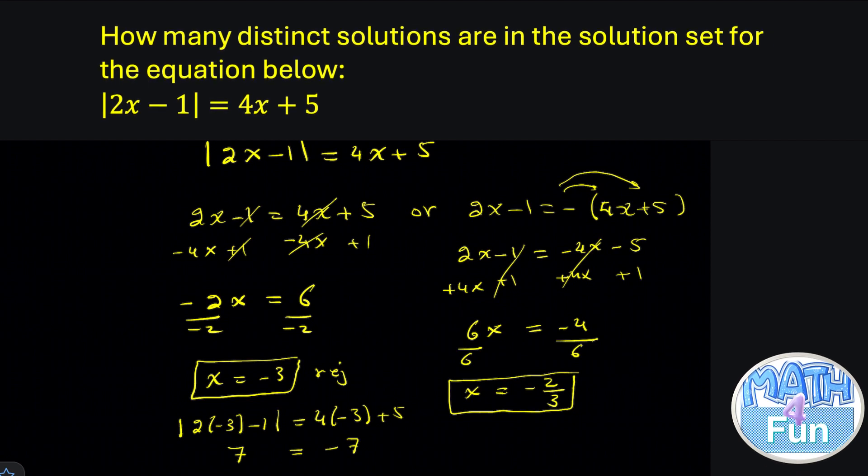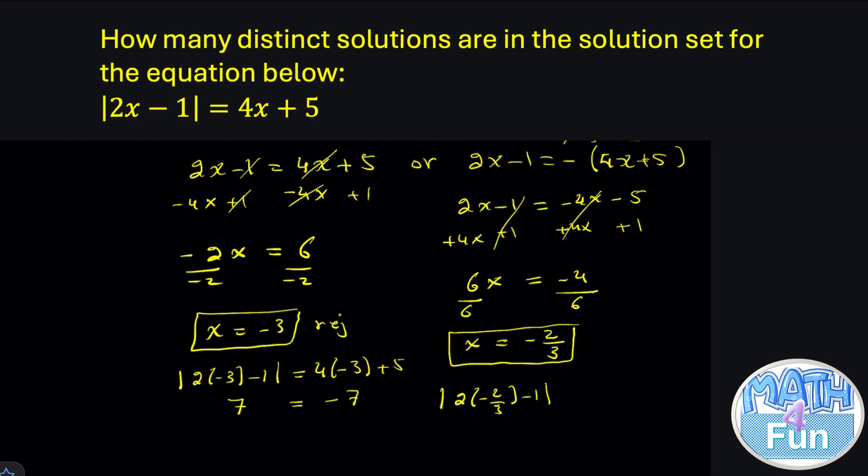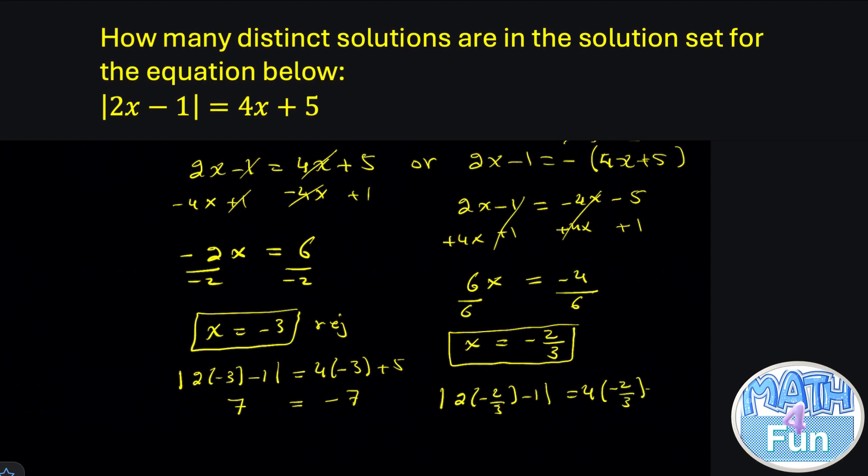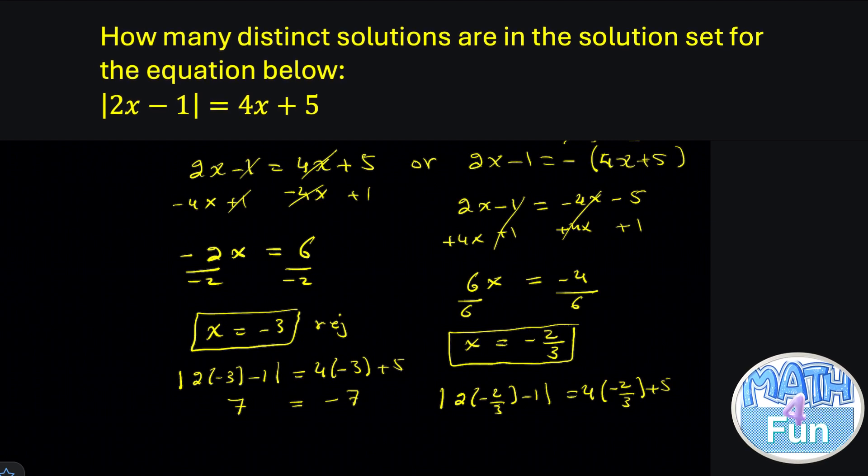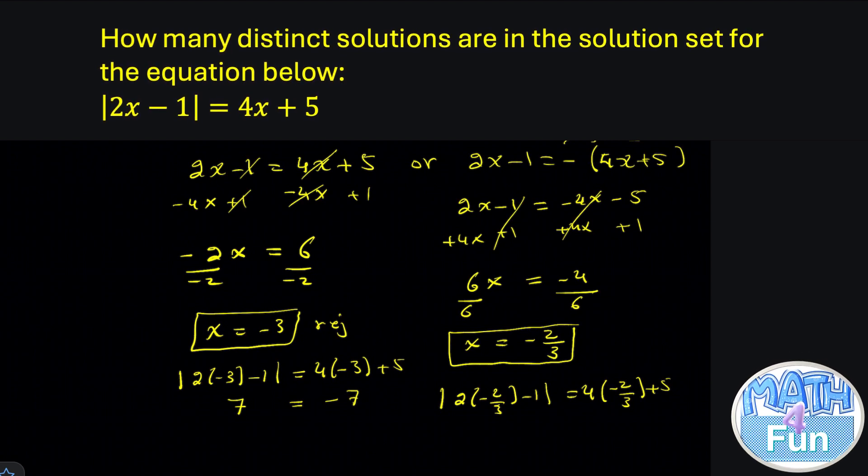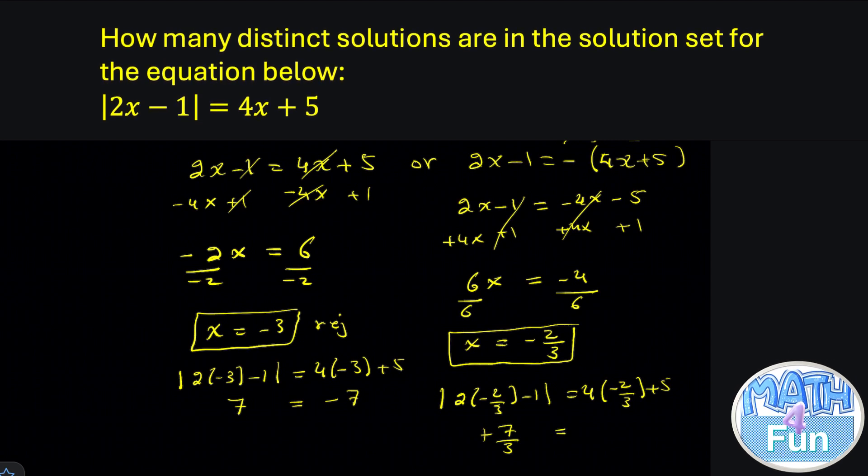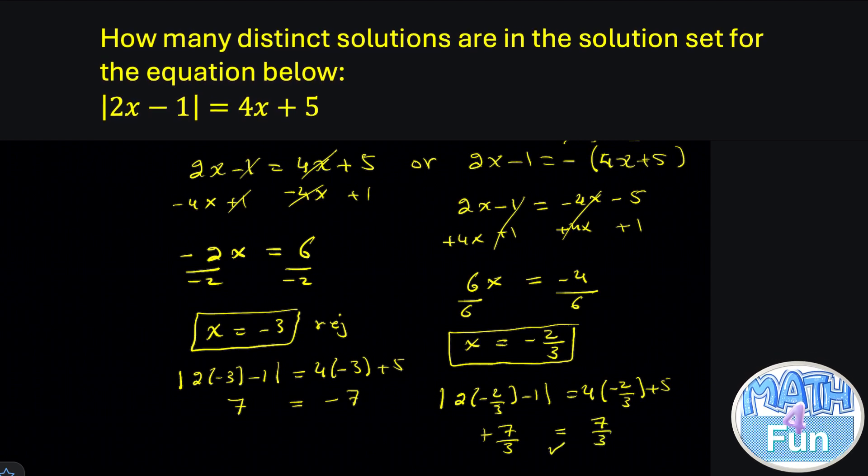And we try x equal to minus 2 over 3. We write absolute 2 into minus 2 over 3 minus 1 is equal 4 into minus 2 over 3 plus 5. You get 2 times minus 2 over 3 which is minus 4 over 3 minus 1. Do it by calculator you get minus 7 over 3. In absolute value it becomes plus 7 over 3 is equal. 4 times minus 2 over 3 you get minus 8 over 3 plus 5. Do it by calculator you get 7 over 3 which means that they are equal.